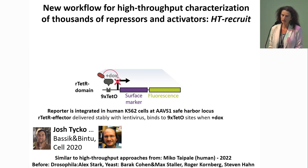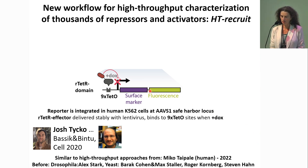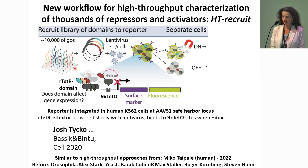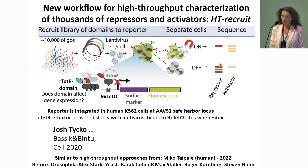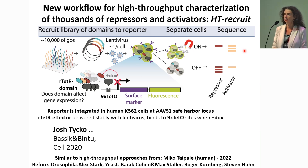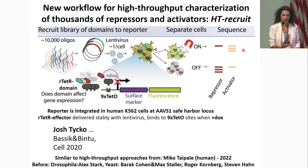As I started my lab, we developed a new workflow to measure candidate effector domains in a pooled manner — 10,000 or 100,000 at a time. It still relies on a fluorescent reporter; we added a surface marker to turn it into a magnetic reporter, and we recruit candidate effector domains at this reporter as in classical assays. We synthesize and deliver via lentivirus a library of fusions between a synthetic DNA binding domain and candidate effector domains, such that each cell contains a single effector domain. We then separate cells that are on from cells that are off, and quantitatively ask which sequences are enriched in the off population — those must be repressors — and which are enriched in the on population — those must be activators.